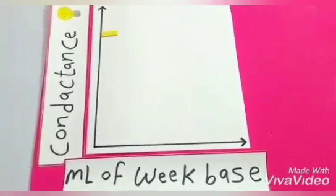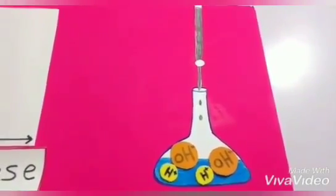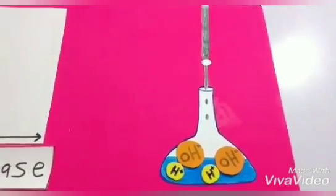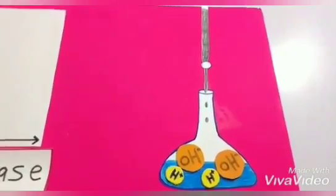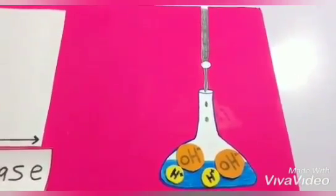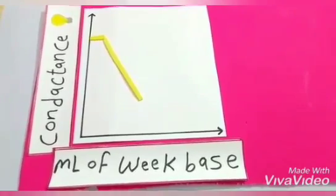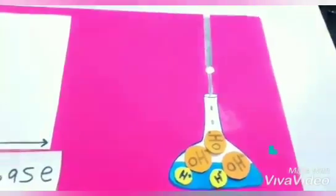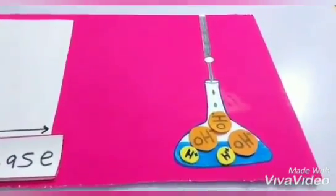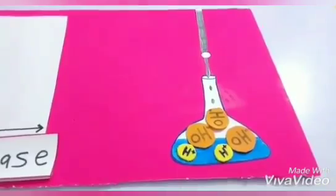When we start adding a weak base to the solution, this leads to an increase in hydroxide ions. The hydrogen ions from the ionization of hydrochloric acid react with the hydroxide ions from the weak base to form water molecules. When all hydrogen ions have reacted with all hydroxide ions, this is called the equivalence point. The Conductance decreases due to the formation of water molecules. After the equivalence point, addition of excess weak base leads to no further change in the titration curve and does not increase the Conductance. The equivalence point becomes part of the curve.